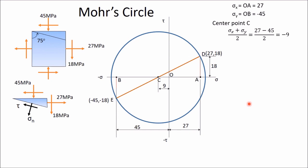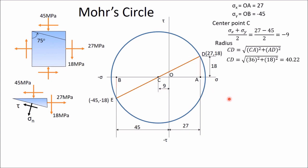Once the Mohr's circle is drawn, determine its radius CD. From the right-angle triangle, CD equals the square root of (CA² + AD²), where CA equals 27 + 9 = 36, and AD equals 18. So radius equals √(36² + 18²) = 40.22 MPa. The angle ACD is determined as tan⁻¹(18/36), which gives approximately 27 degrees. CD represents the x-plane and CE represents the y-plane.